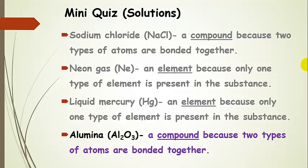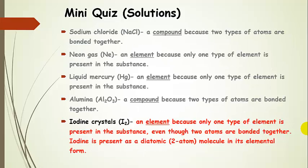Alumina is a compound because it has two different kinds of atoms bonded together — aluminum and oxygen. Every sample of alumina is going to have two aluminums for every three oxygens. And finally, iodine crystals — this is an element, and it's kind of tricky. It's an element because there's only one type of element present. We have two iodine atoms bonded together to form iodine, which is a diatomic molecule in its elemental form.